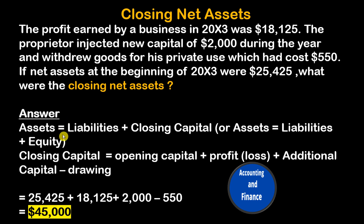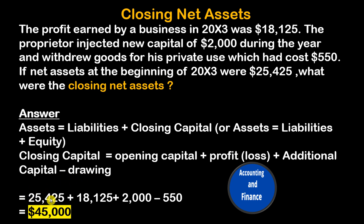Answer: Assets equals Liabilities plus Closing Capital, or Assets equals Liabilities plus Equity. Closing Capital equals Opening Capital plus Profit or Loss plus Additional Capital minus Drawings. Therefore: $25,425 plus $18,125 plus $2,000 minus $550 equals $45,000.